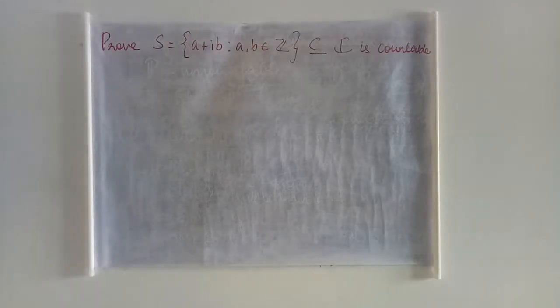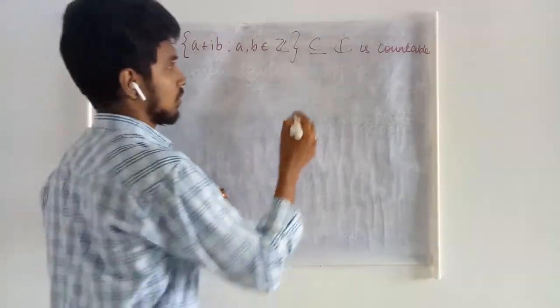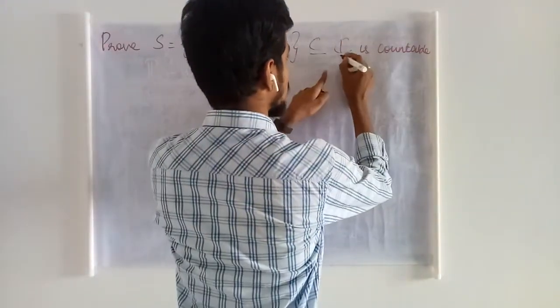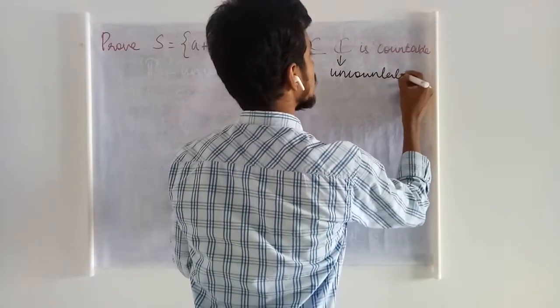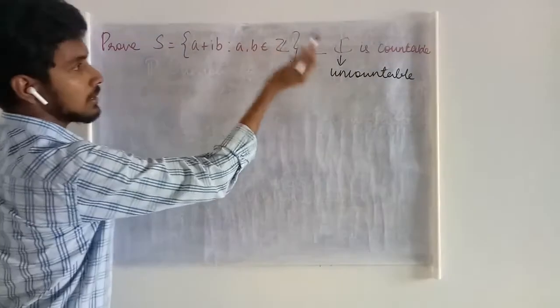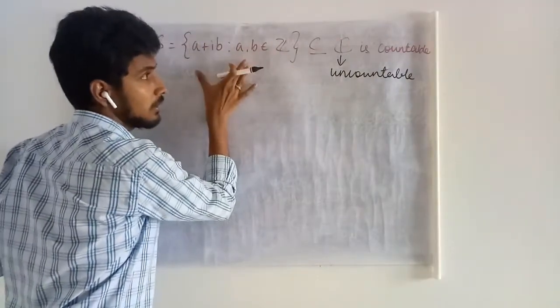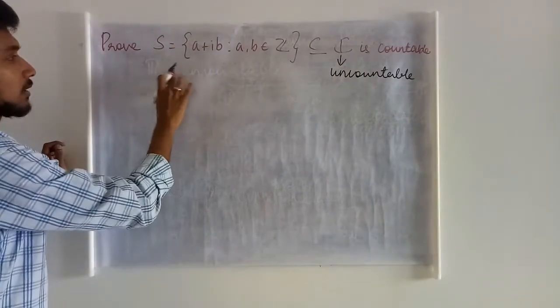In the previous results that we have seen, we have come to know that the set of all complex numbers is uncountable. But here we are going to prove some subset of the set of all complex numbers is countable. Let us examine the given set.